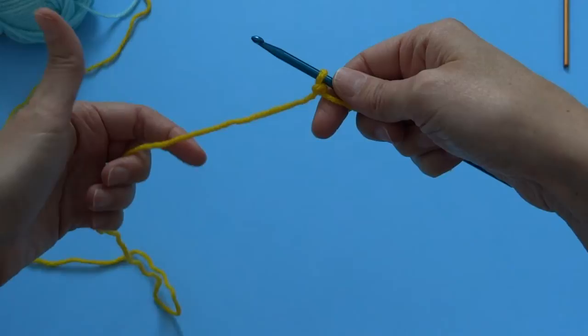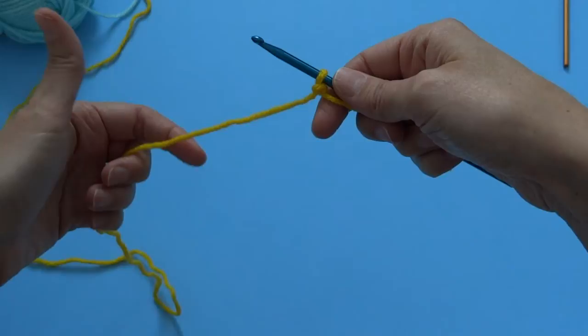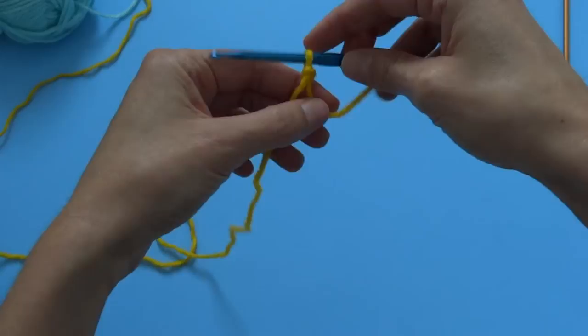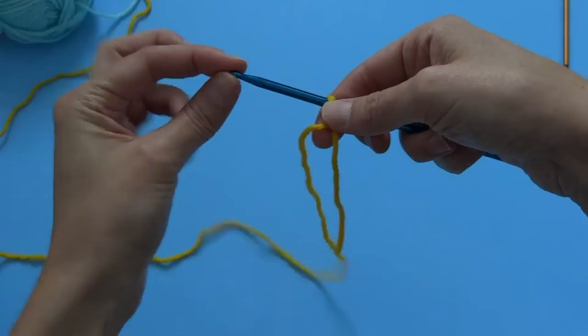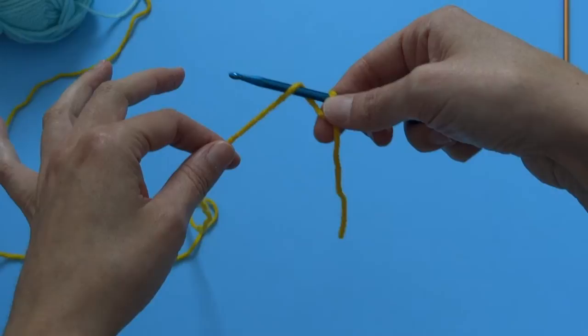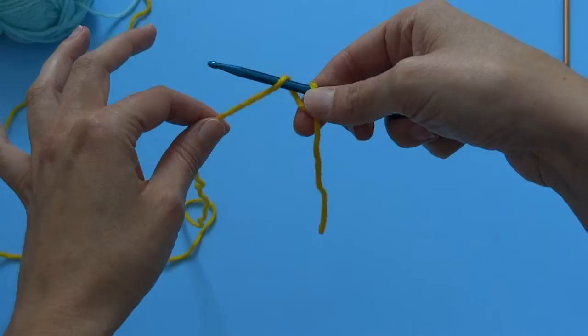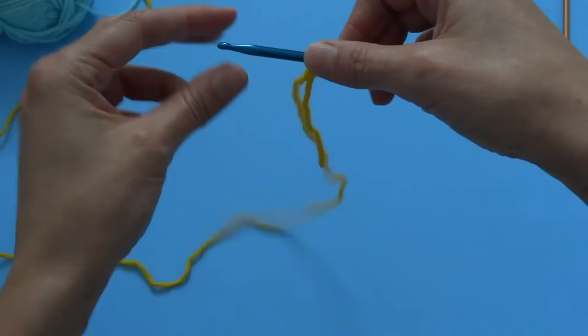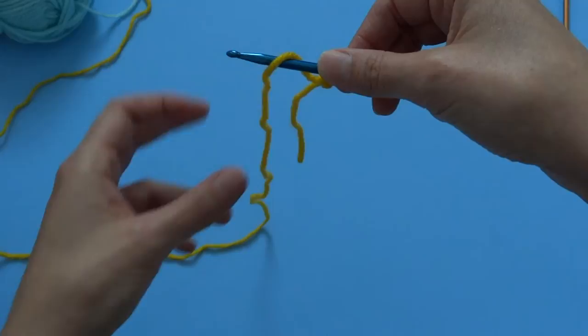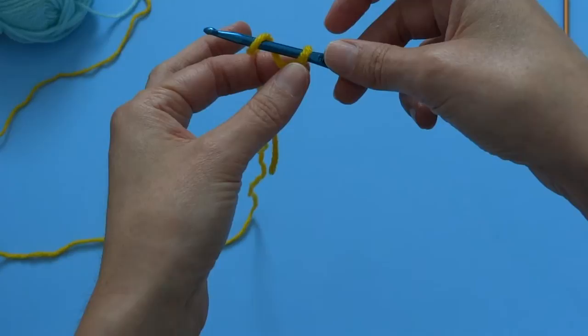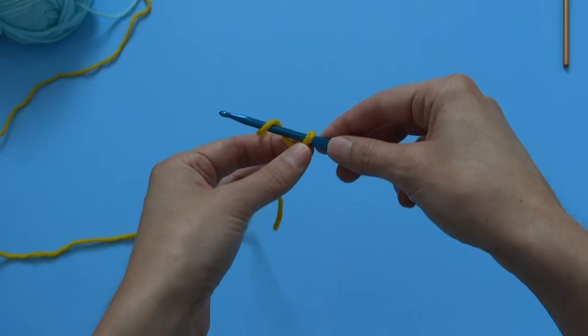So to chain, you take the string in your non-crochet hook hand, you wrap it around your hook. So remember, if you're holding your hook here, it's easiest to have your hook facing you and to wrap around from the back. Now once you get comfortable, you will discover your own style. But for demonstrative purposes, we're going to hold our hooks with the hook facing us, wrap that string around our hook, and you want to try and hold the work that's already attached to your hook.